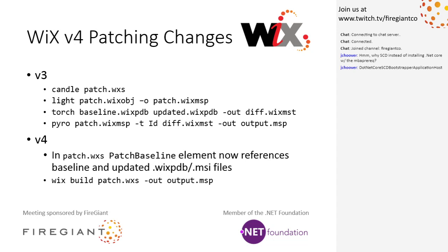Sean, Bob, anything you want to add or ask? Jacob, I know Jacob's been excited about getting patching solved so we can move forward on all the things to make Burn handle it and unlock all the Burn unit tests. You didn't mention it explicitly, but you can have multiple patch baseline elements, which means you retain the ability to have a patch with multiple transforms. Correct. So it's an even greater simplification than shown, because in v3, if you had multiple transforms, you had candle, light, then torch, torch, torch, then pyro — with multiple MSTs you had to line up dash-T lines with IDs matching across. By bringing this all into the element, all your metadata and description is in the patch information, and you can have as many baselines as you want.